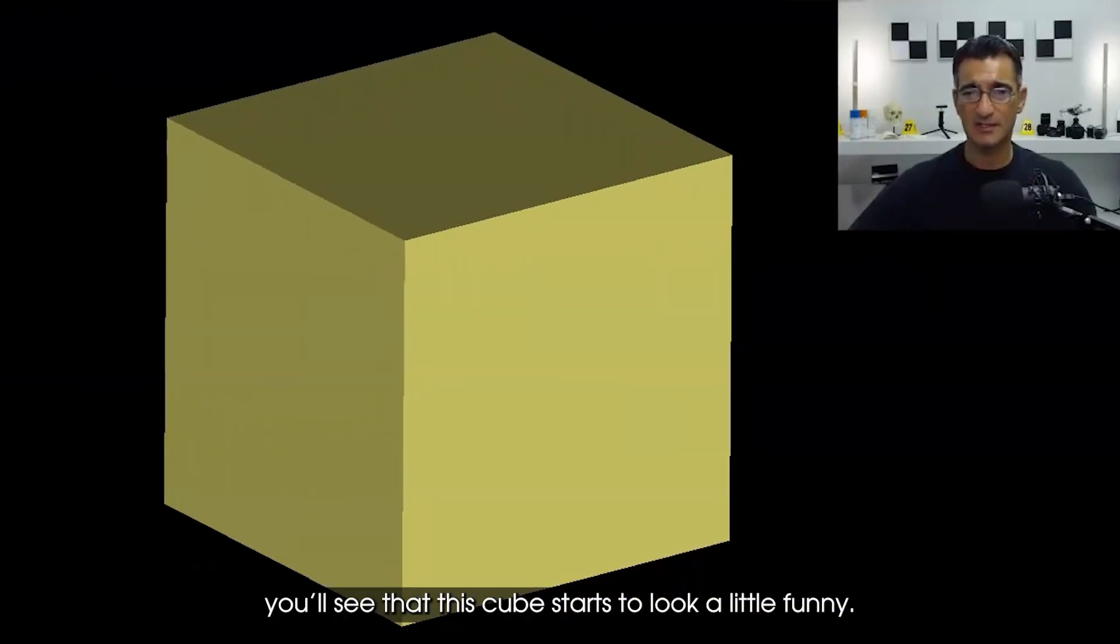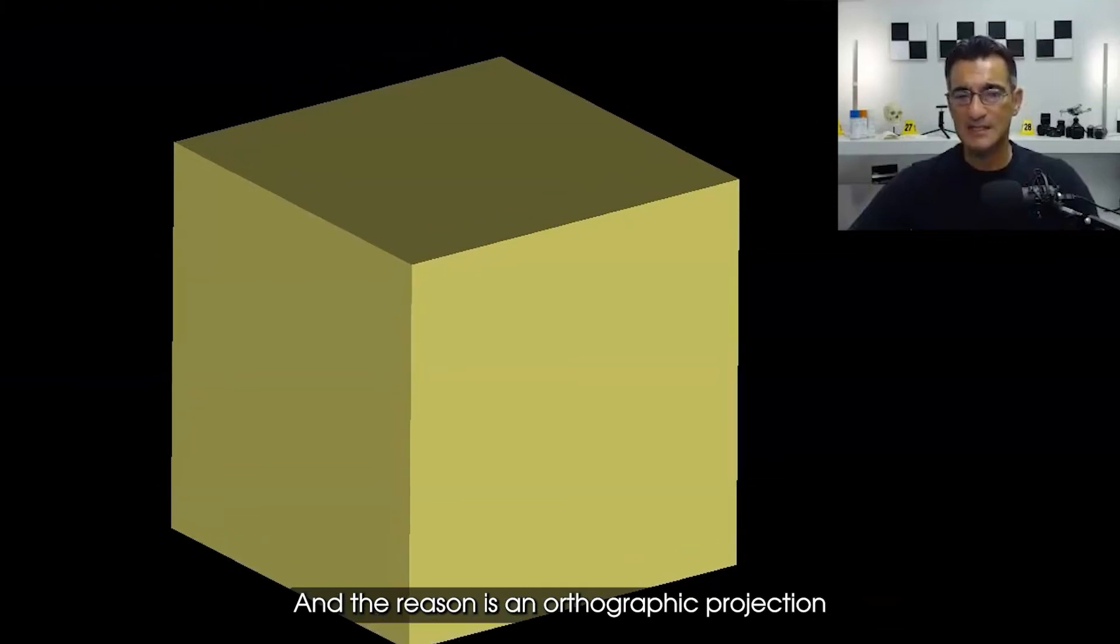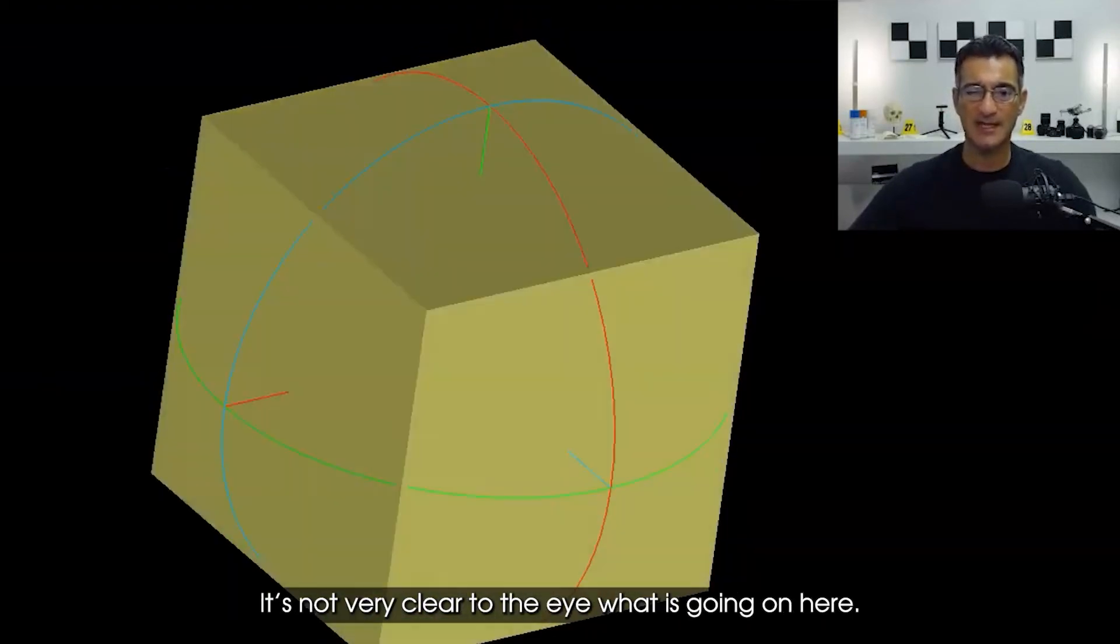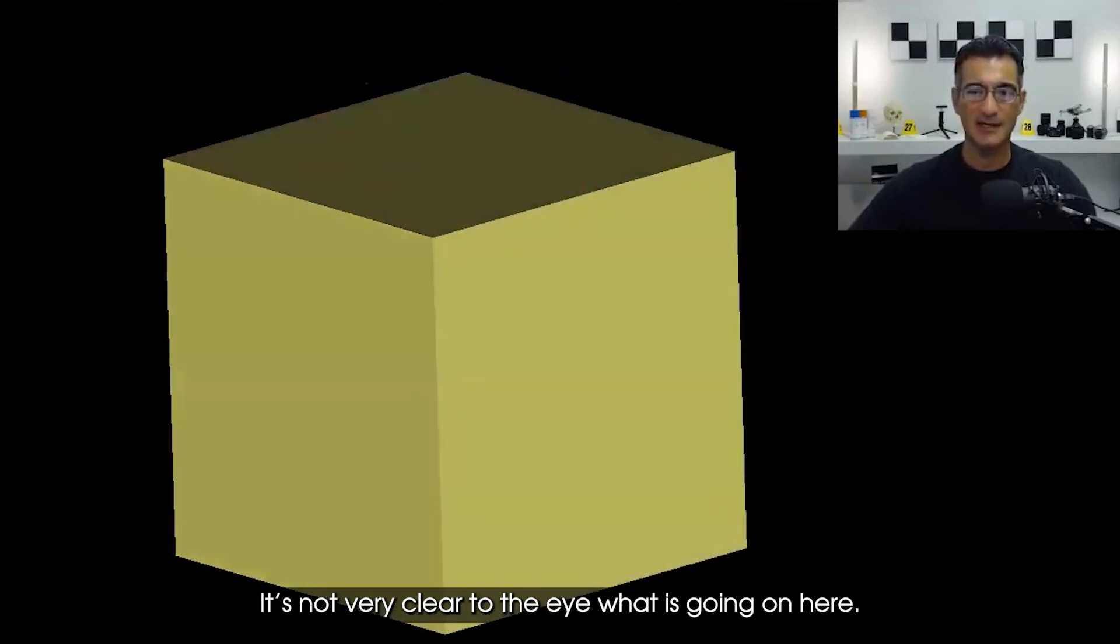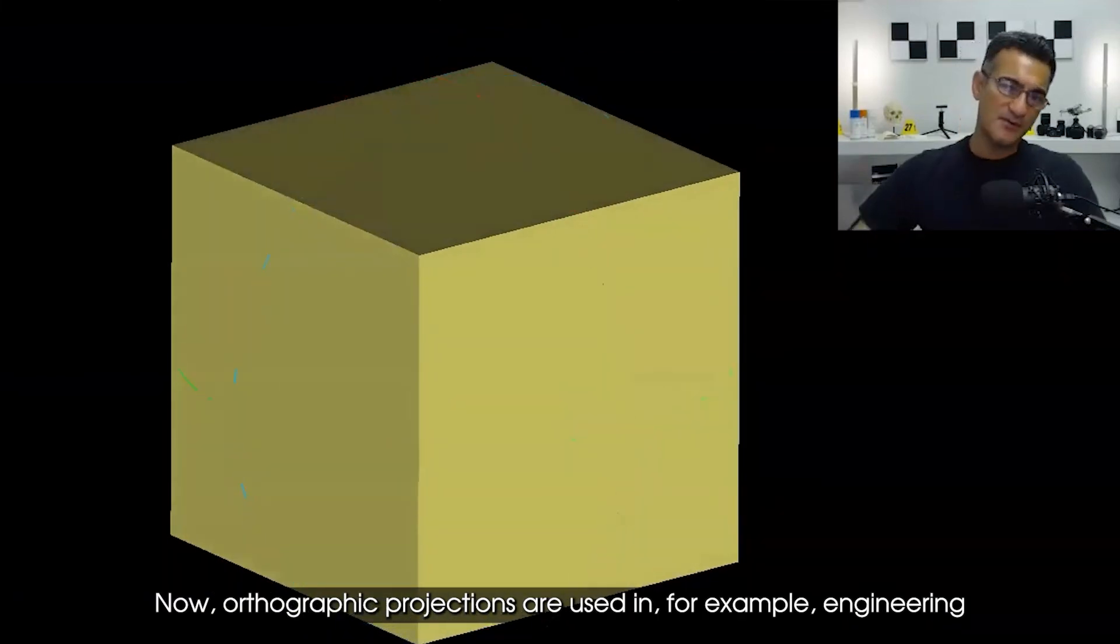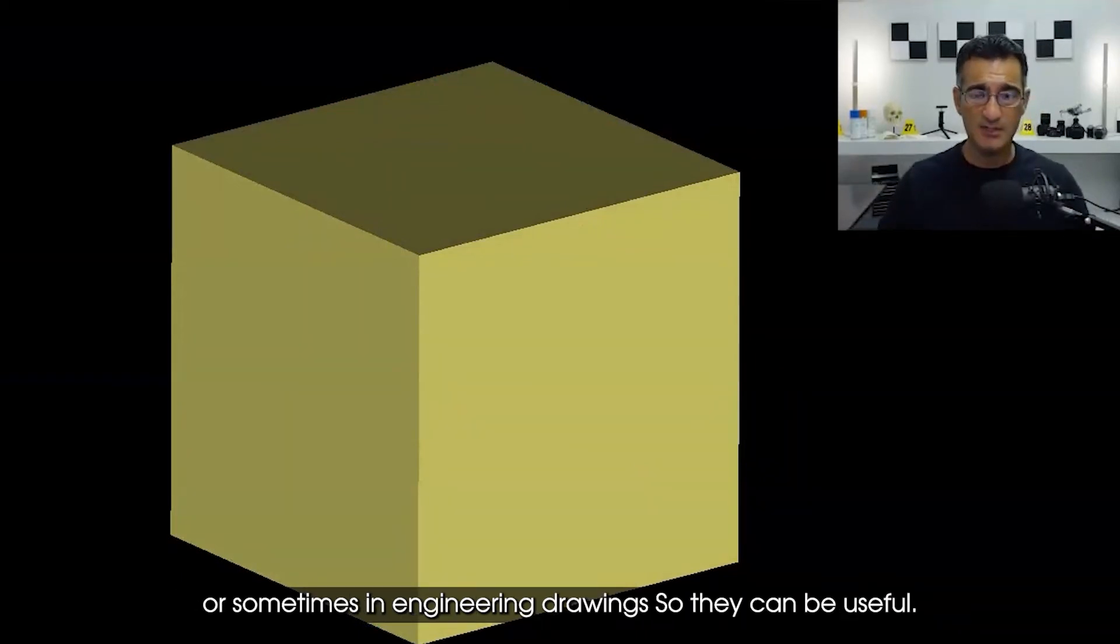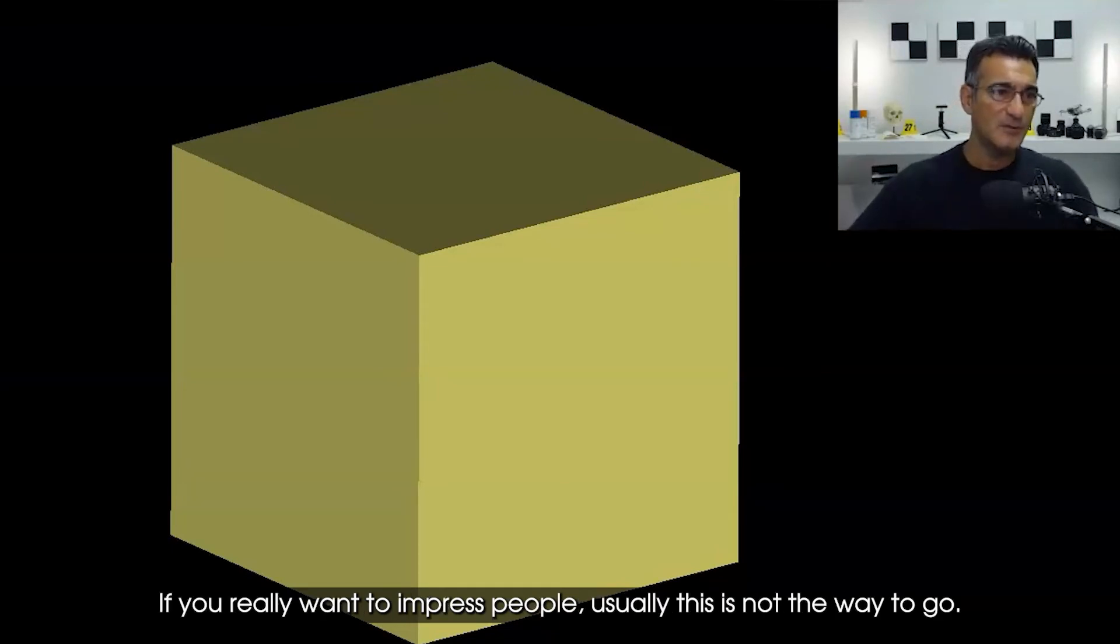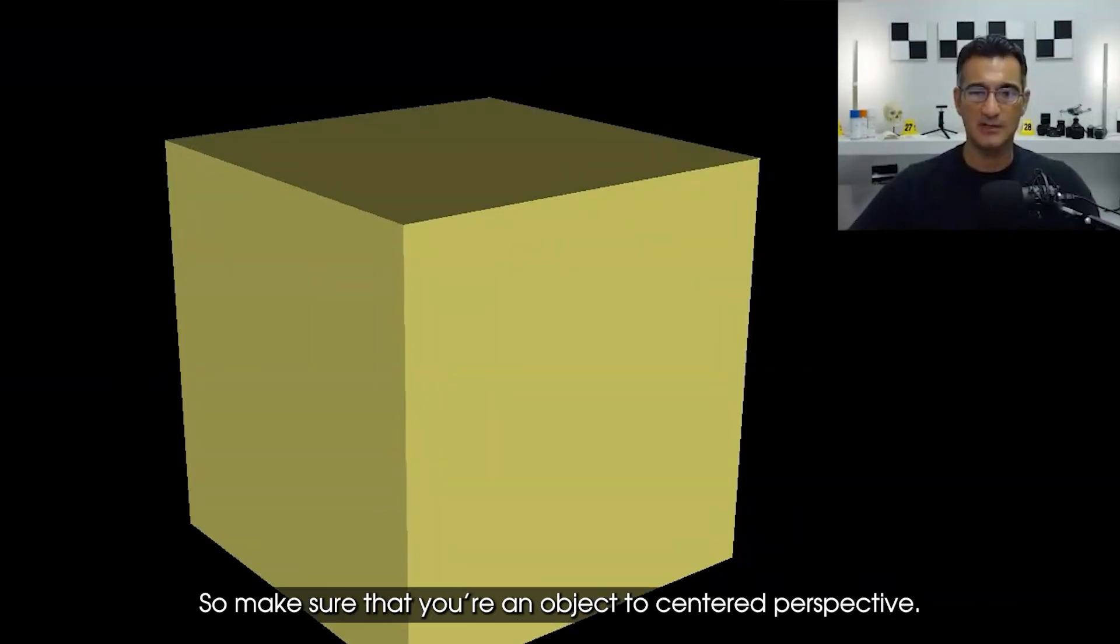The reason is an orthographic projection gives you all the sides sort of in an equal dimension, and so it looks a little strange when you're looking at it. It's not very clear to the eye what is going on here. Orthographic projections are used in engineering or engineering drawings, so they can be useful. But they're not that useful for presenting an animation - if you really want to impress people usually this is not the way to go. Make sure that you're in object-centered perspective and that's what I've got here.